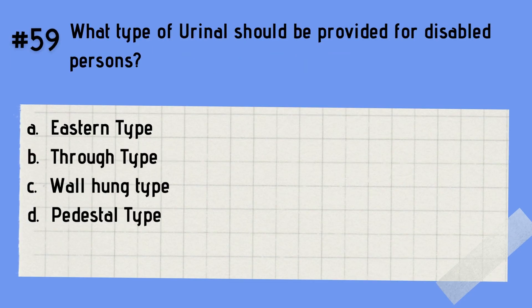Question 59: What type of urinal should be provided for disabled persons? A. Eastern type. B. Through type. C. Wall hung type. D. Pedestal type. The answer is C — wall hung type. A wall hung type urinal should be provided for persons with disability.